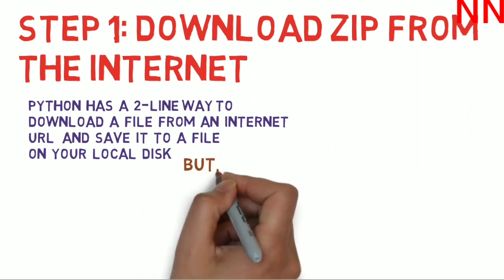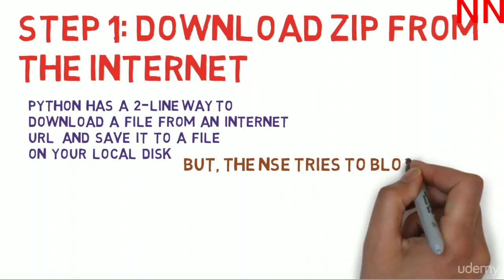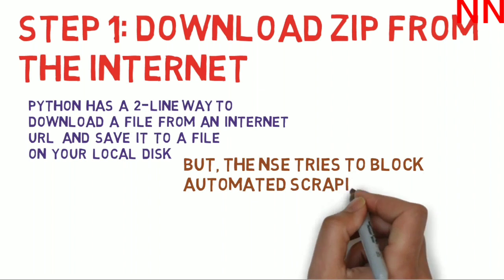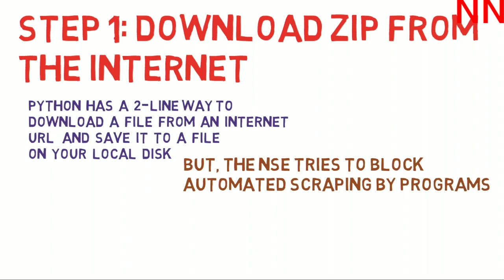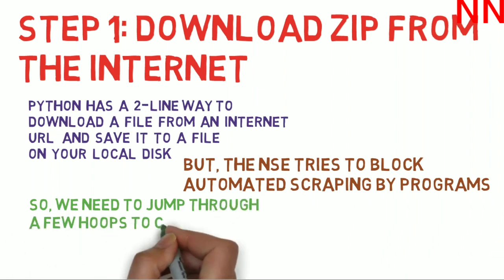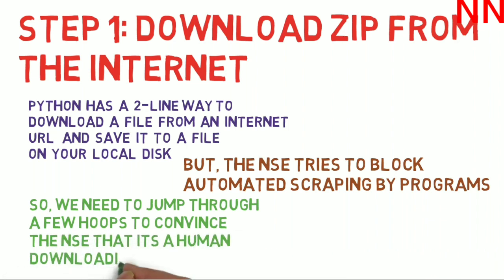The NSE tries to block automated scraping by programs, so if the NSE feels like a program is trying to access the website, it will block it. We need to jump through a few hoops to convince the NSE that it's a human downloading the file and not a program. At the end of step one, you should have a zip file saved in a location you specified on your local disk.